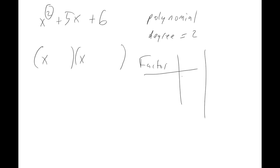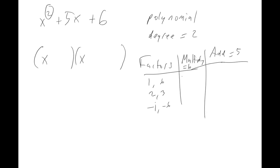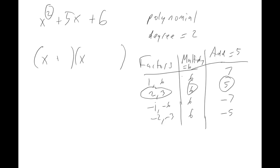The right way of breaking apart the six for this problem is a pair of numbers that multiplies to equal six AND adds up to make five. One plus six is seven, two plus three is five — that matches. So the answer is (x plus two)(x plus three).